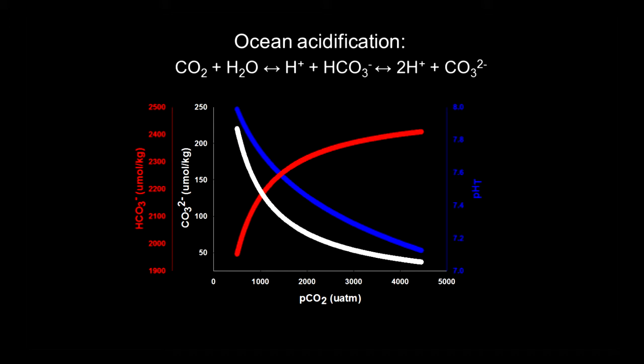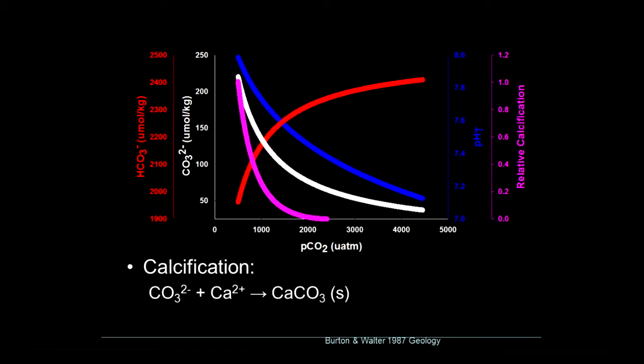This decline in carbonate ion is potentially important for calcification, such as occurs in corals, where carbonate ions react with calcium to form solid calcium carbonate — the skeleton in many organisms. Based on inorganic precipitation rates, the expected response of calcification would be a dramatic decline as CO2 levels rise.